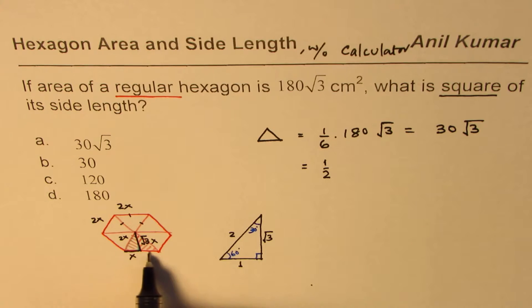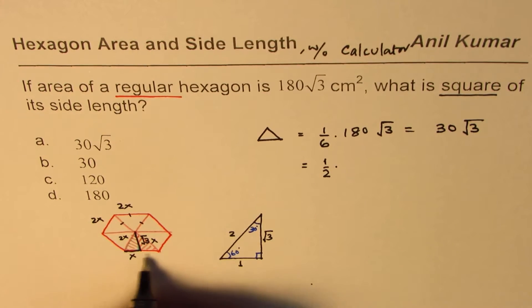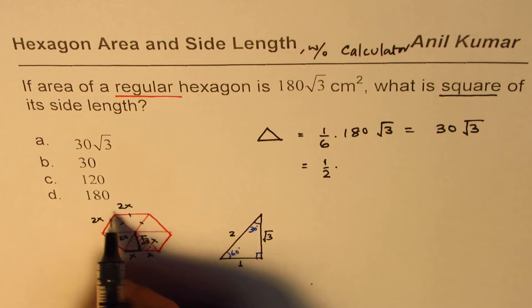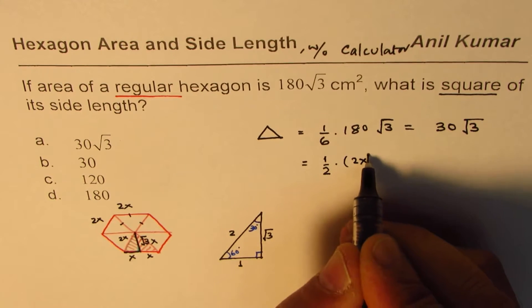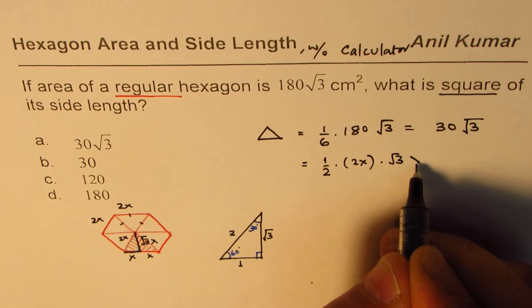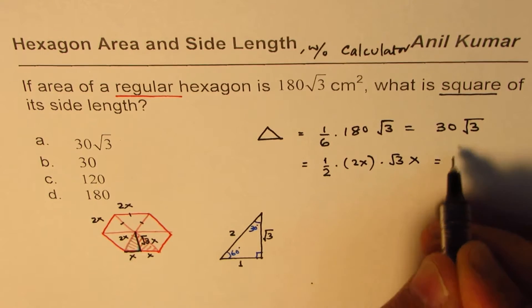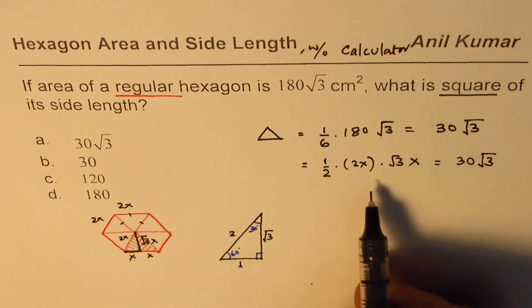So area of this big triangle is how much? Area of the big triangle will be half of the base, which is 2x, times height, which is square root 3x. This equals 30 square root 3, since that is the area of each triangle.